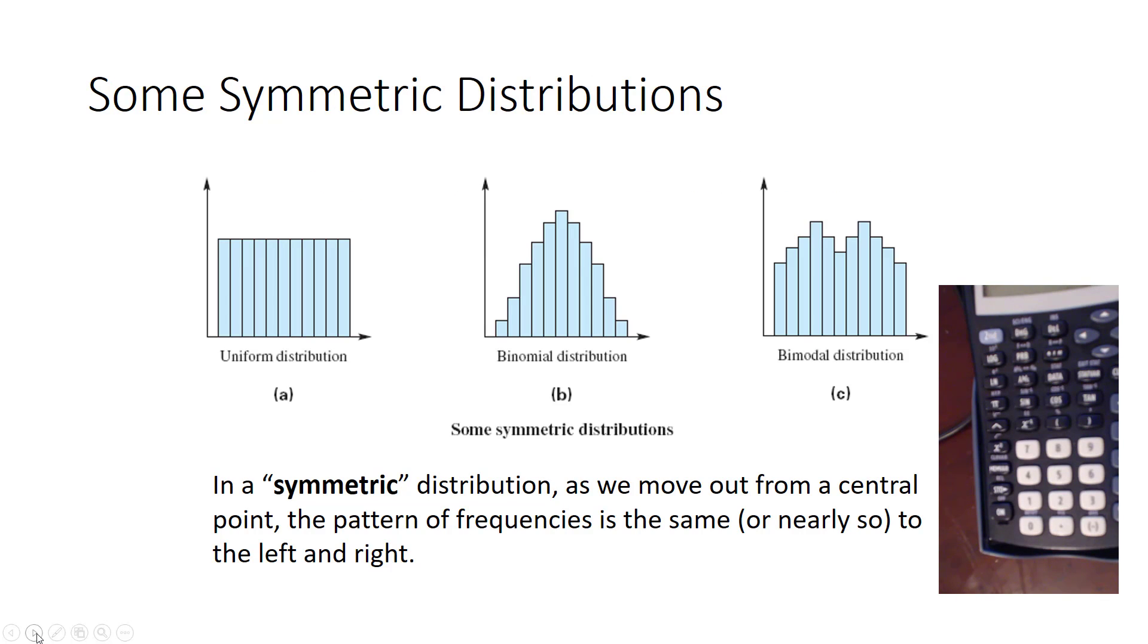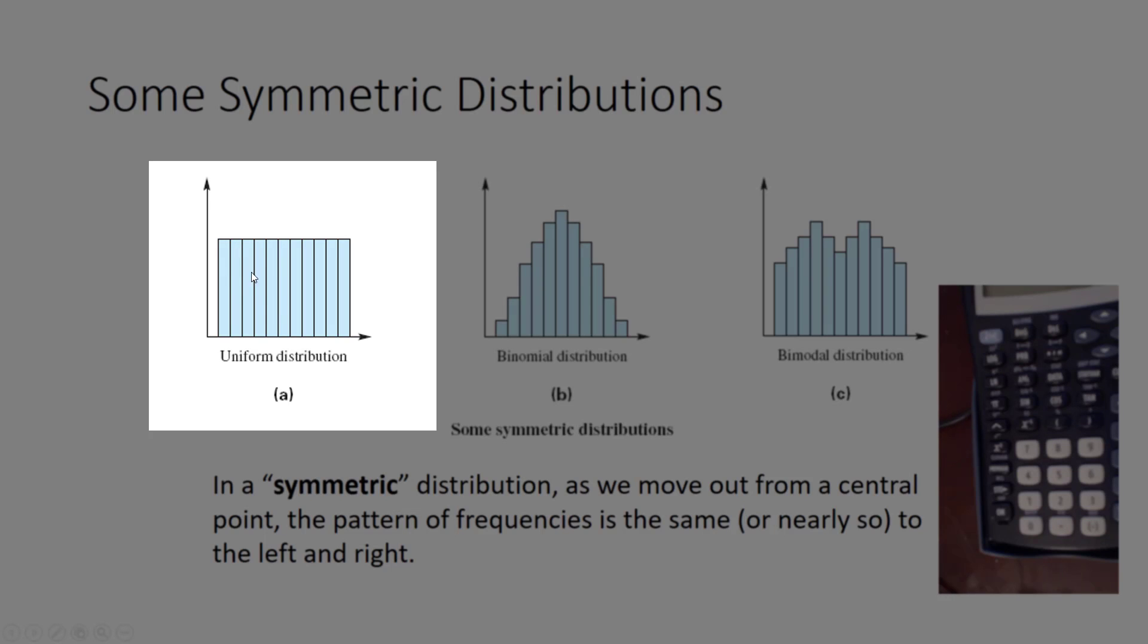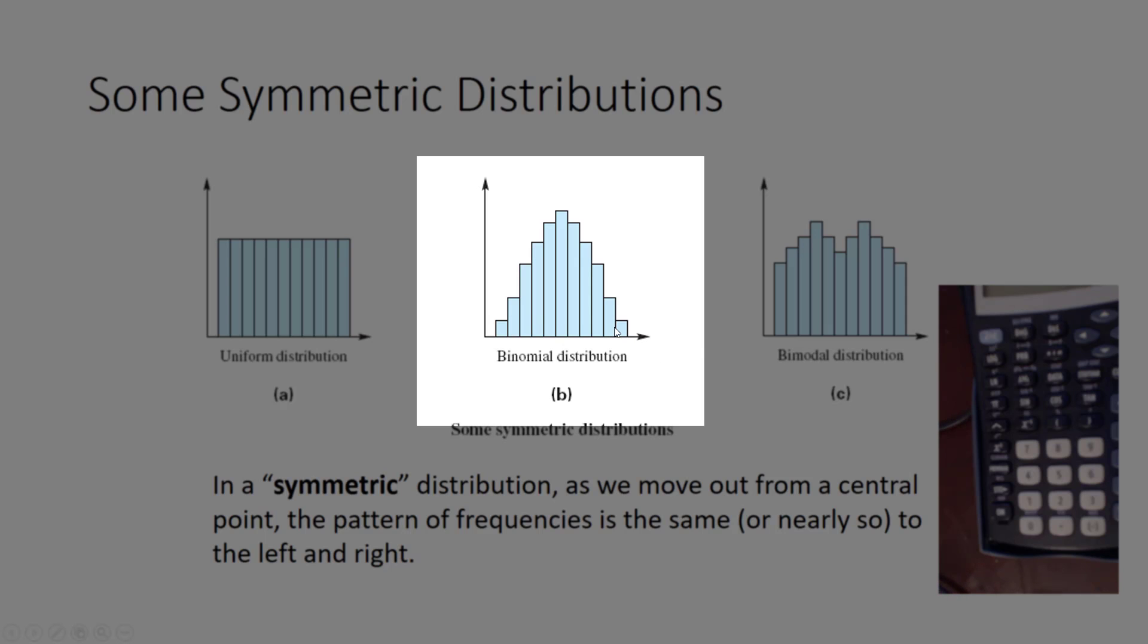Here are some examples of symmetric distributions. The uniform distribution, all of the data values occur the same amount of times. In a binomial distribution, you see it has this characteristic of the middle data value occurring the most frequently and the smaller data value and the larger data value occurring a smaller number of times and about the same number of times.